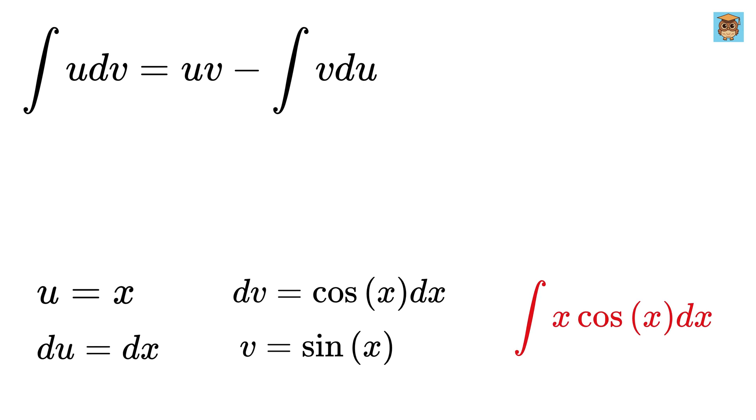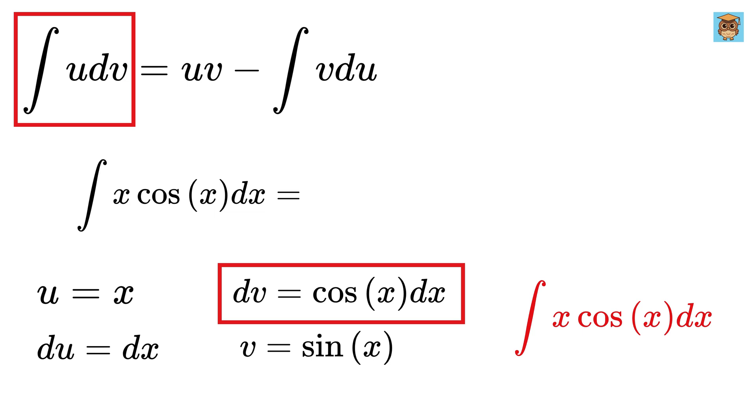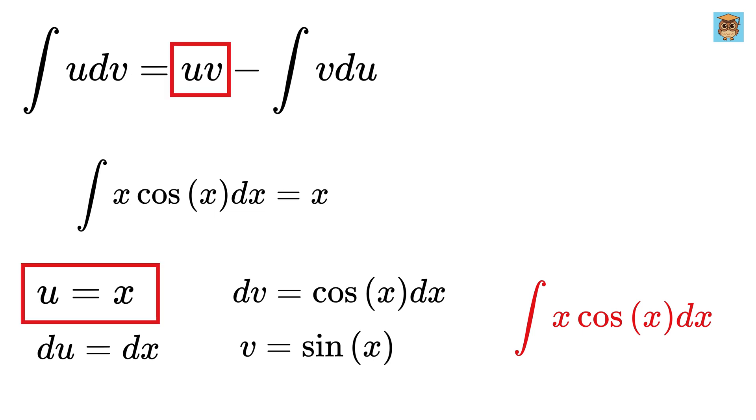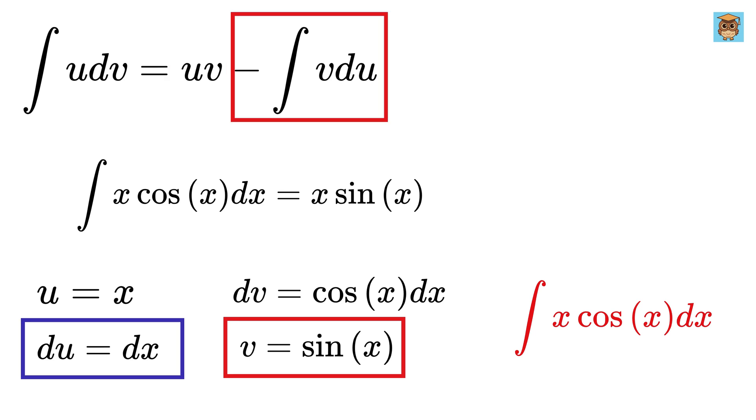It's super simple now. Substitute them into this formula. u is x, dv is cosine x dx, then u is x and v is sine x while v and du are sine x and dx.